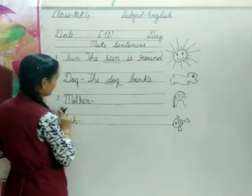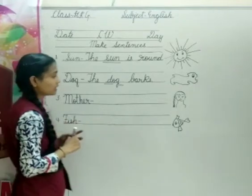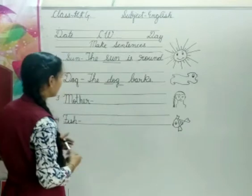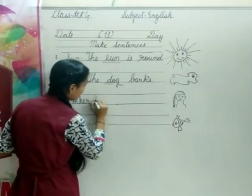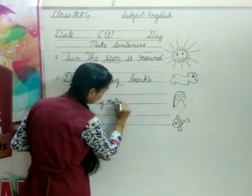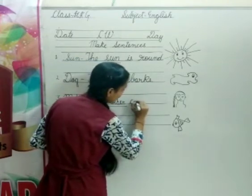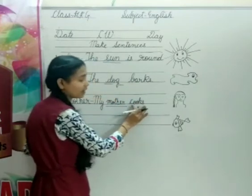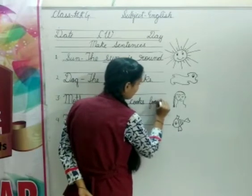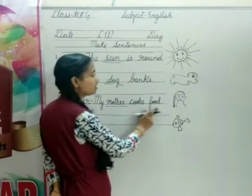Let's see another example that is M-O-T-H-E-R, mother. Mother, tasty food cooks. My mother, my mother cooks, C-O-O-K-S cooks, cooks means food.